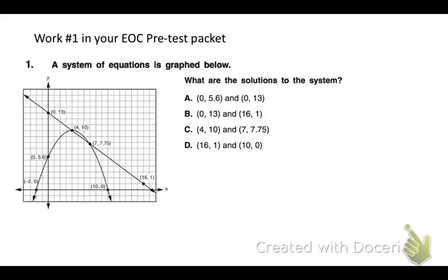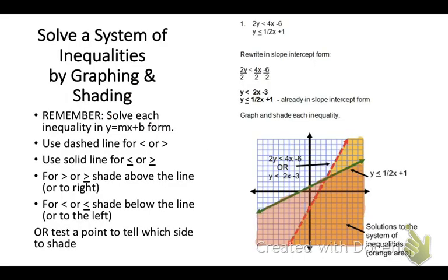Go back to your EOC packet right at number one. This is one of these nonlinear systems. Notice we have a parabola and a line. What are the solutions? So the solutions is simply where are those two graphs, so the curve and the line crossing. Make sure you do not choose the points that are on the x and the y axis. They're given to you to try to distract you. You want the two points where the curve and the line are crossing. So the point 4, 10 and the point 7, 7.75. C is your answer.